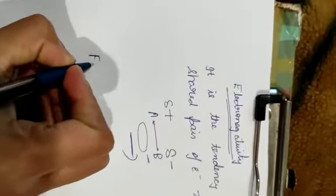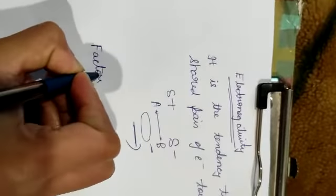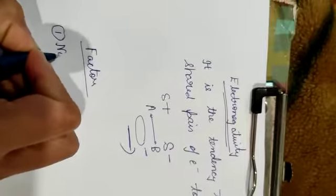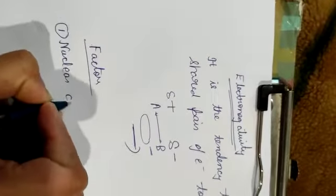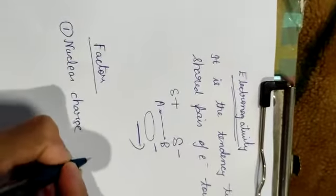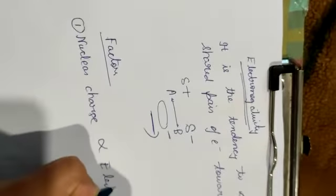Next is factors on which electronegativity depends. The first factor is nuclear charge. Nuclear charge is directly proportional to electronegativity.